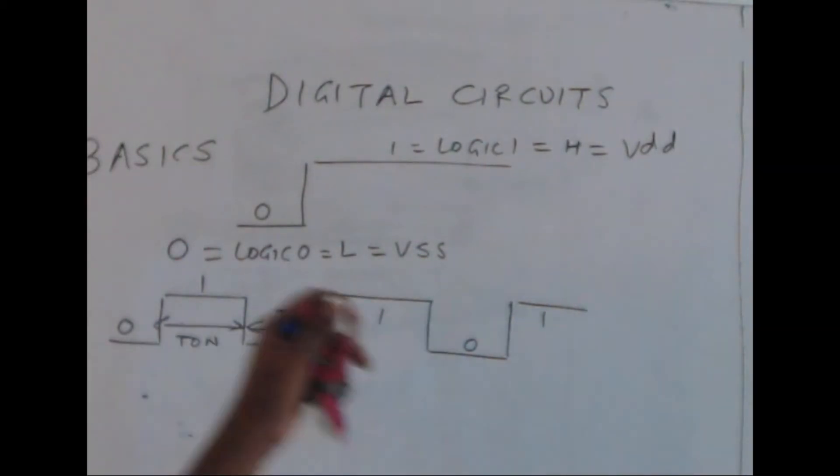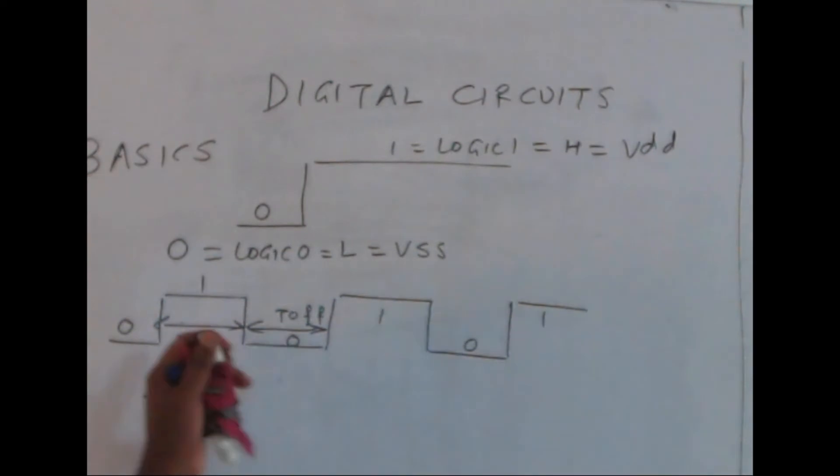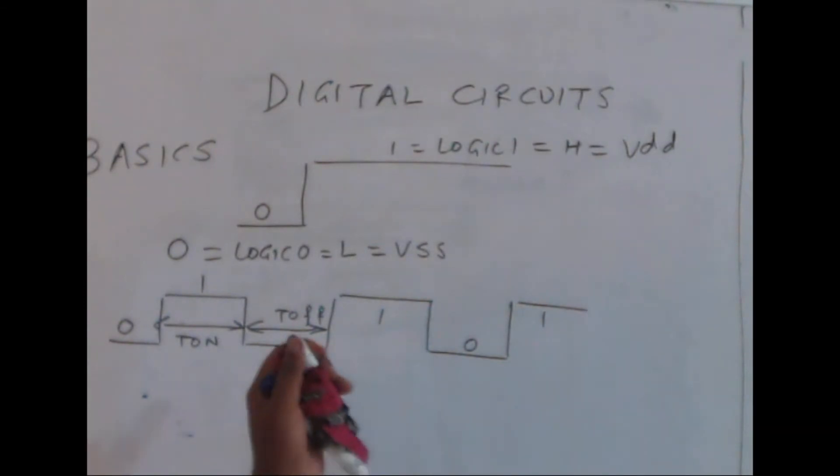We are now playing with 0s and 1s in digital circuits. Basically, we have different kinds of numbers with which we can work: binary numbers, binary coded decimal numbers, octal numbers, grey codes, and hexadecimal numbers.